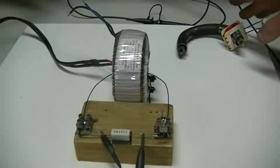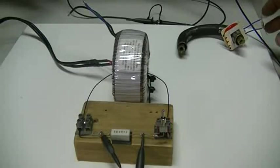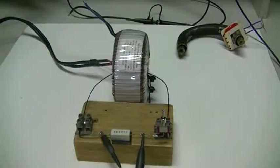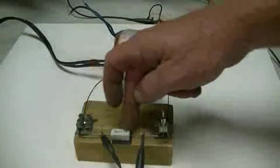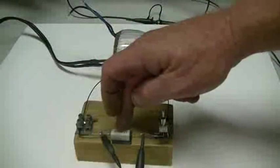So channel one of our scope, our yellow channel, is simply across our 100 milliohm resistor.